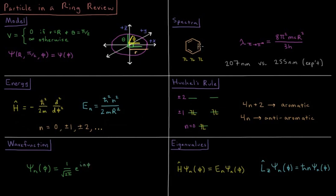We can use this model to look at the spectra of things like aromatic molecules such as benzene. The wavelength of the pi to pi star transition we calculate in that video to be 8 pi squared m c r squared over 3h,